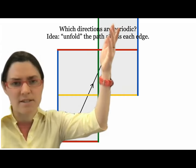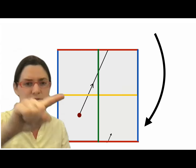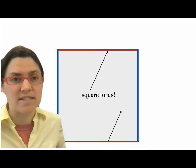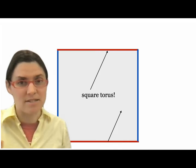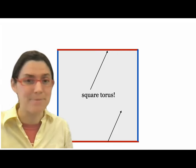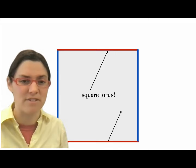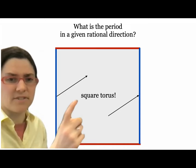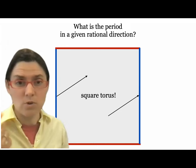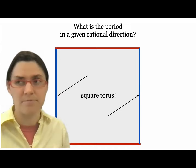This gives us a surface — actually the square torus. So instead of studying billiards on the square, we can study linear trajectories on the square torus. This is much easier, partly because it's all in the same direction and partly because there's a lot of existing work on understanding surfaces like this. The top and bottom sides are identified and the left and right sides are identified.